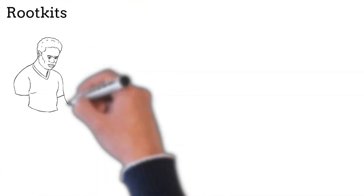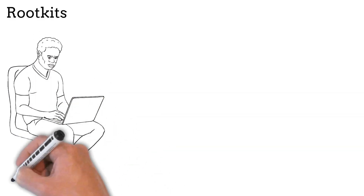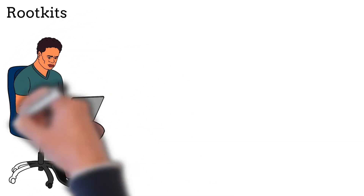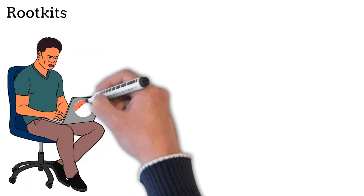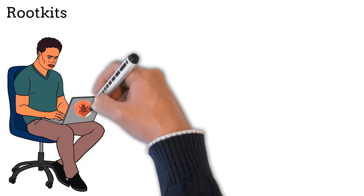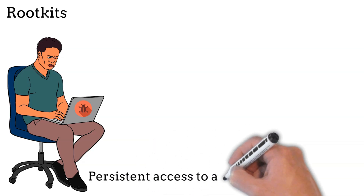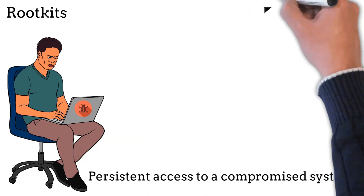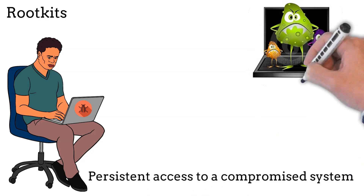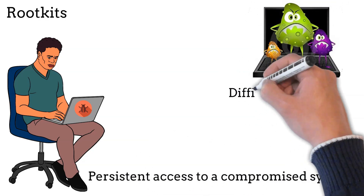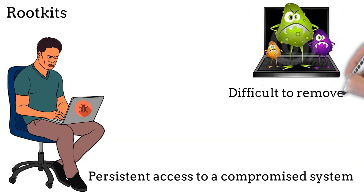Rootkits are a type of malware that allows attackers to maintain persistent access to a compromised system while hiding their presence from detection. They often manipulate system functions to conceal their activities and can be extremely difficult to remove.